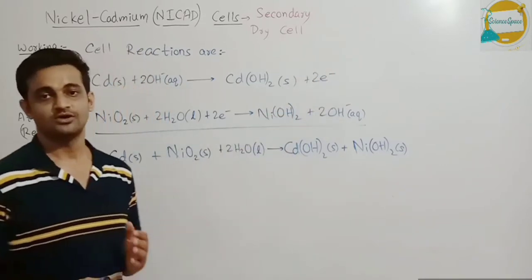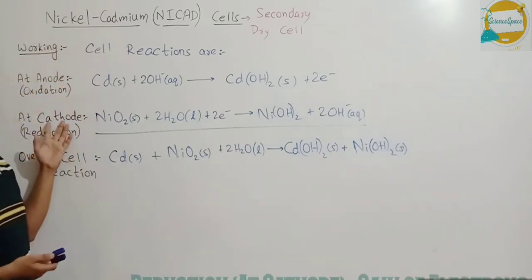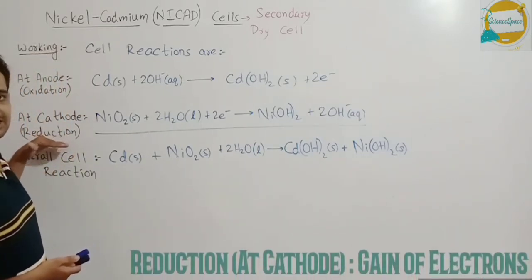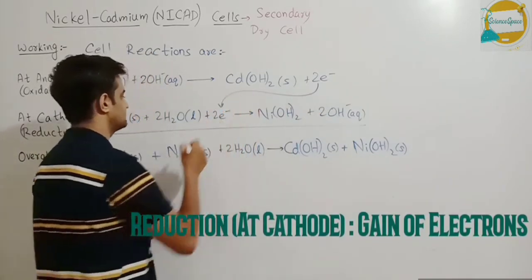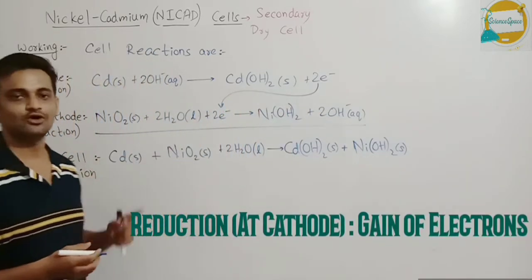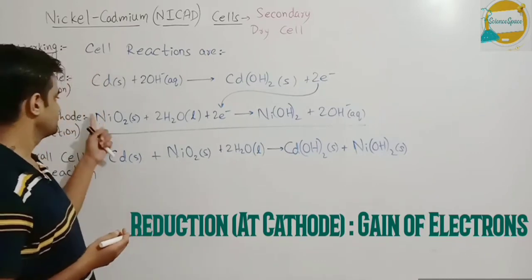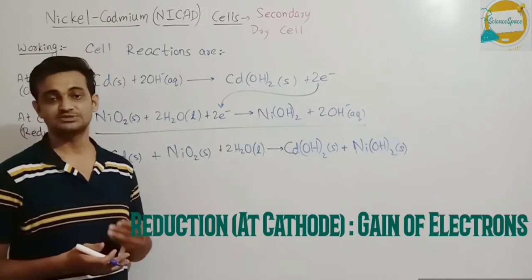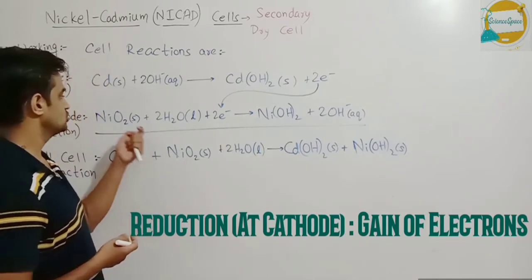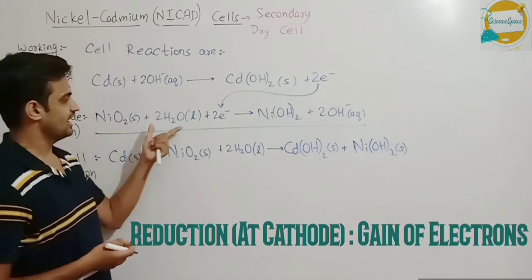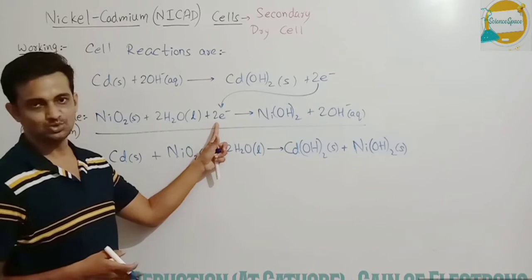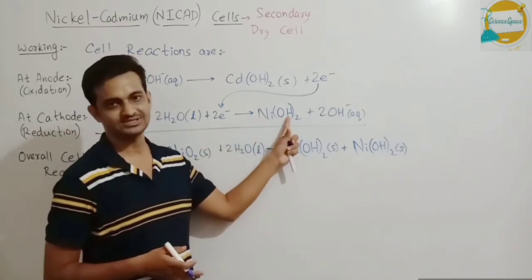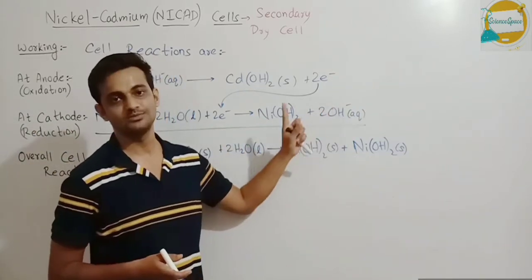And at cathode the reduction will take place. In reduction these two electrons will be accepted by the nickel oxide present on the electrodes. The nickel oxide layer is present on the electrodes. So this nickel oxide layer and water from the electrolyte will combine with these two electrons to form nickel hydroxide and hydroxyl ions will be released.